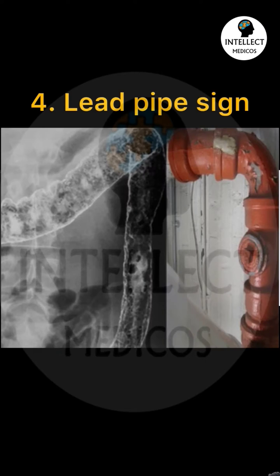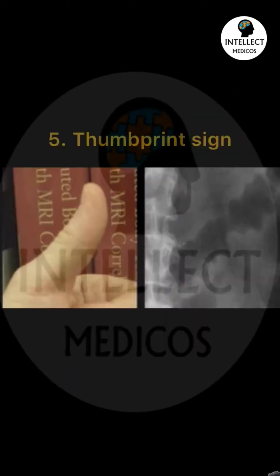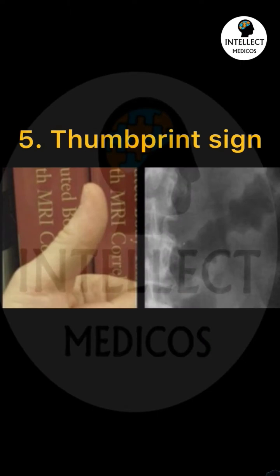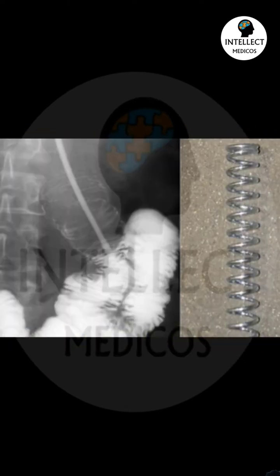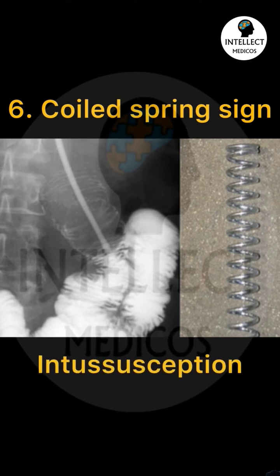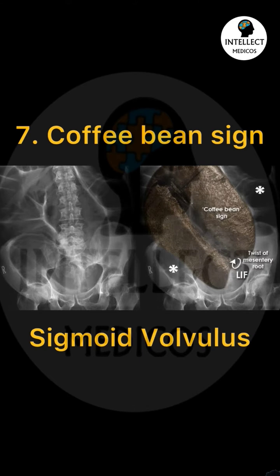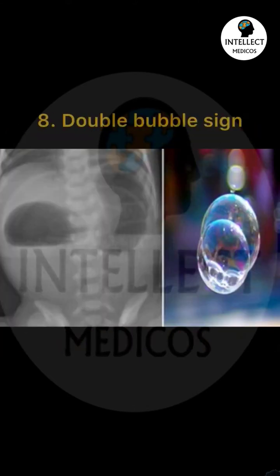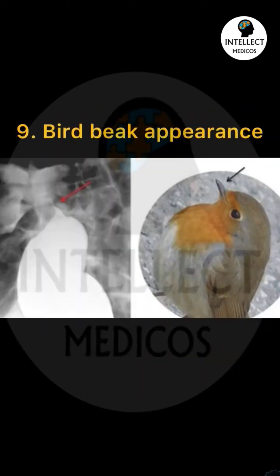Fourth, lead pipe sign, seen in ulcerative colitis. Fifth, thumbprint sign, seen in ischemic colitis. Sixth, coil spring sign, seen in intussusception. Seventh, coffee bean sign, seen in sigmoid volvulus. Eighth, double bubble sign, seen in duodenal atresia.